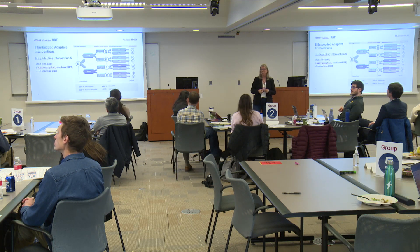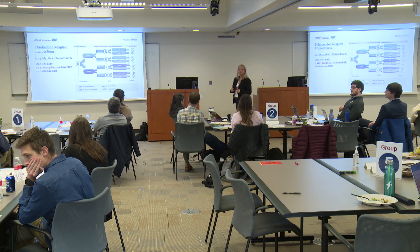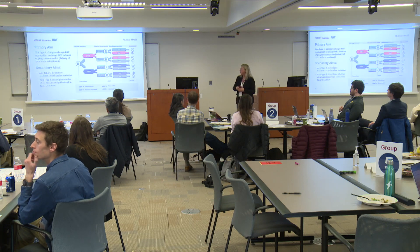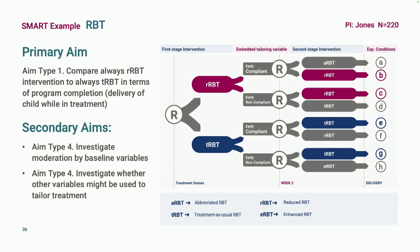The primary aim for this study was a Type 1 — comparing the two non-adaptive interventions embedded in the SMART: always reduced RBT for everybody at every stage, versus always treatment-as-usual RBT for everybody at every stage. Coming back to an earlier conversation: the thing they wanted to provide the most assurances about, and which determined the sample size of 220, had nothing to do with adaptation.